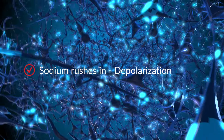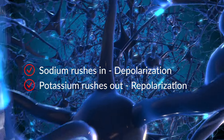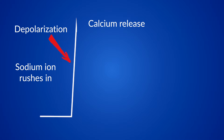If you remember action potentials in neurons, normally sodium rushes in depolarizing the membrane, then potassium rushes out repolarizing it — this takes around one millisecond. But with cardiac muscle cells, something different happens. When the cell depolarizes, this positive charge causes calcium to be released from a structure inside the cell called the sarcoplasmic reticulum. Calcium is also a positively charged ion, so the cell won't repolarize as quickly. We get a phase called the plateau phase, where repolarization slows down significantly, causing the action potential in cardiac muscle cells to last up to 300 milliseconds — way longer than the one millisecond of neurons.